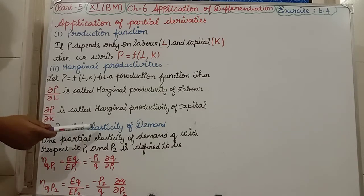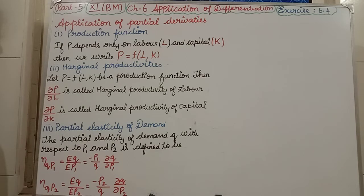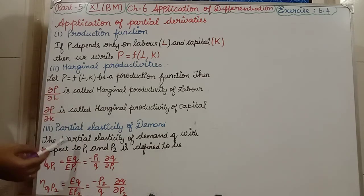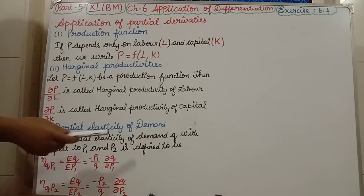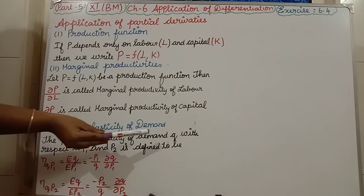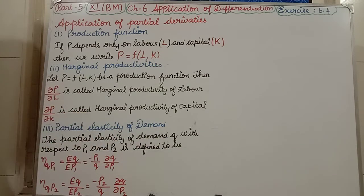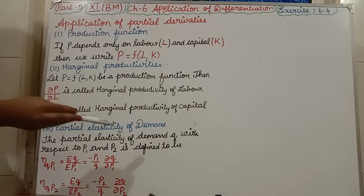The third one is partial elasticity of demand. The partial elasticity of demand Q with respect to P1 and P2. P1 and P2 are the prices. P1 is one price and P2 is another price. Here Q is the given function. So, it is defined to be,